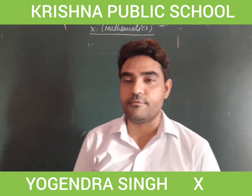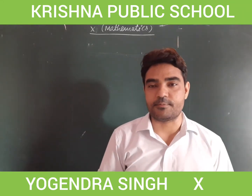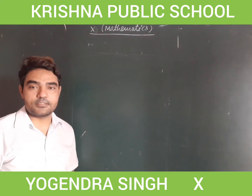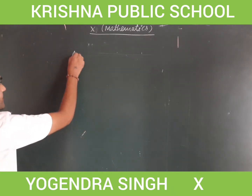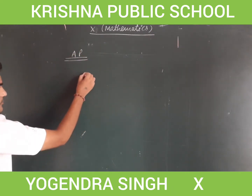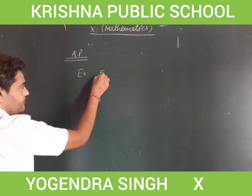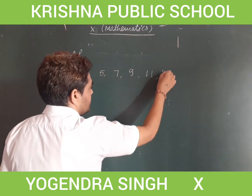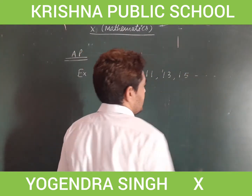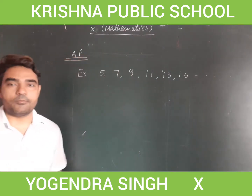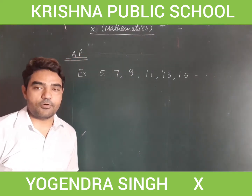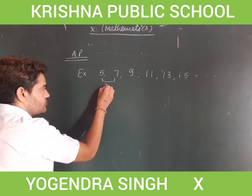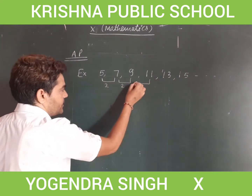Today we will discuss arithmetic progression (AP). For example, take the series 5, 7, 9, 11... in which the common difference is the same. Here the difference between consecutive terms is 2 each time — this difference remains the same throughout, which is what defines an arithmetic progression.